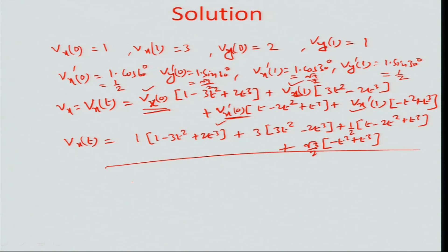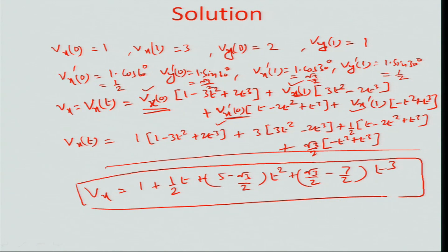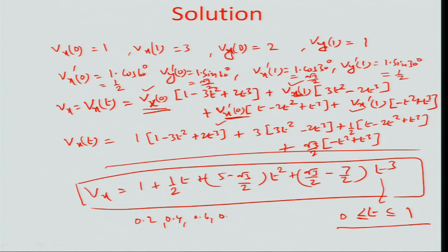Algebraically simplifying, we arrive at: Vx(t) = 1 + (1/2)t + (5 − √3/2)t² + (√3/2 − 7/2)t³. This gives the value of Vx for any given t. As t varies between 0 and 1 — for example in increments of 0.2, 0.4, 0.6, 0.8 — we can map Vx across the local domain and formulate a good fit.